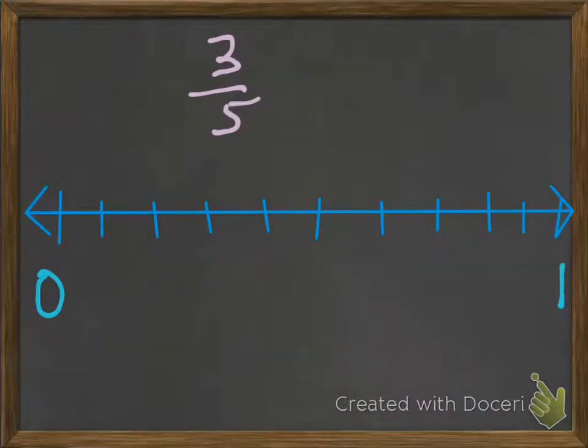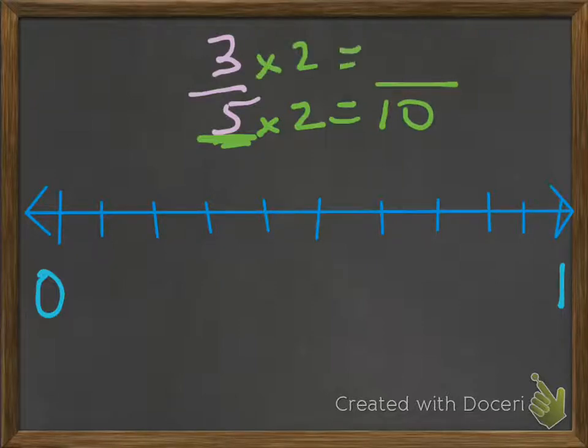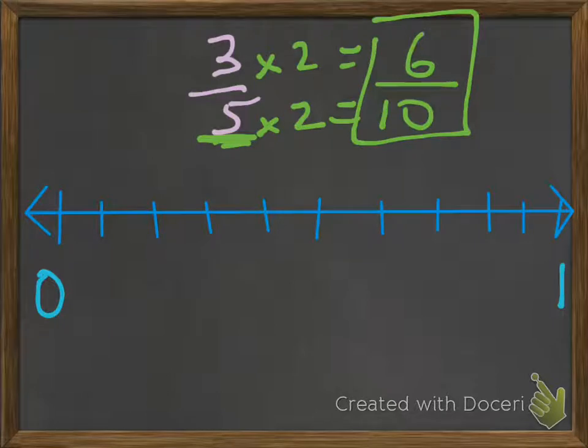Let's start with 3/5. One way we can do this is to make the denominator into a 10 or 100, which makes it much easier. We can start by multiplying 5 times 2, which equals 10. Whatever you do at the bottom, you have to do at the top. So 3 times 2 is 6. That makes it much easier. We see that 3/5 is equivalent to 6/10.